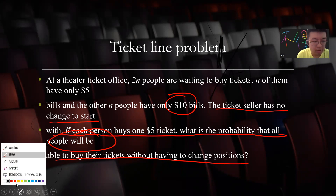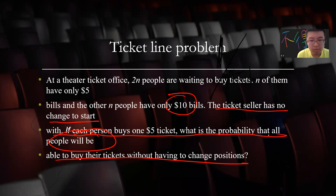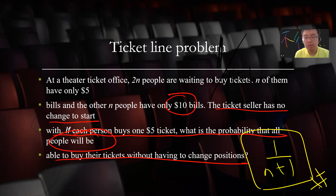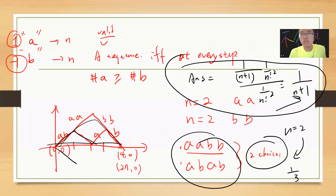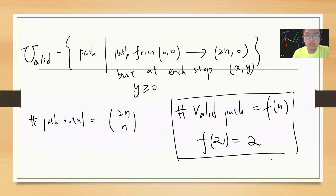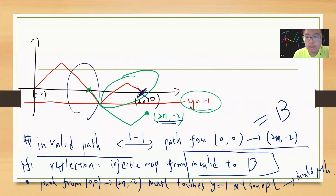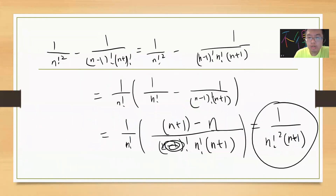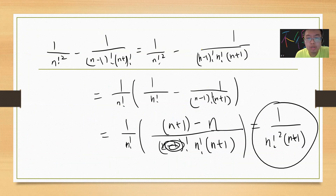So the answer is 1/(n+1). The calculation and the proof are already provided. I hope you guys subscribe to my channel if you want to see more probability questions — you can subscribe and check the playlist.